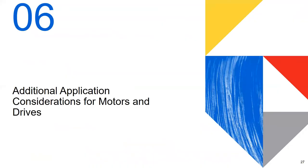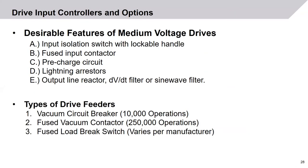Additional application considerations for motors and drives. Desirable features for medium voltage drives include: input isolation switch with lockable handle, fused input contactor, pre-charge circuit, soft charging of not only the transformer but also the DC bus, lightning arrestors, output line reactors, and dV/dt filters or sine wave filters to extend motor lead length. Different types of drive feeders include vacuum circuit breaker — normally good for 10,000 operations before maintenance; fused vacuum contactor — 250,000 operations before maintenance; and fused load brake switch — operations vary per manufacturer.